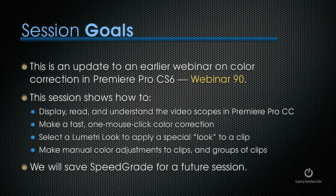This is an update to an earlier webinar I did on color correction in Premiere Pro CS6 — Webinar 90. This session shows how to display, read, and understand the video scopes in Premiere Pro CC. Then we'll make a fast one-mouse-click color correction. Next, we'll select a Lumetri look, which is new with this version of Premiere, to apply a special look to a clip. We'll wrap up by making manual color adjustments to clips and groups of clips. We'll be saving Speed Grade for a future session.